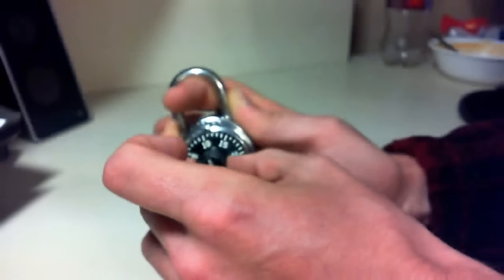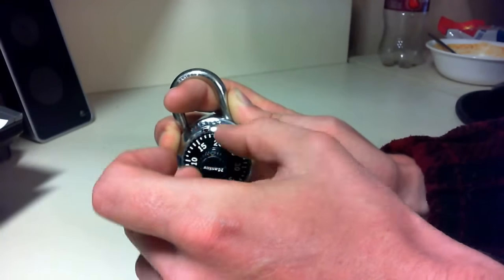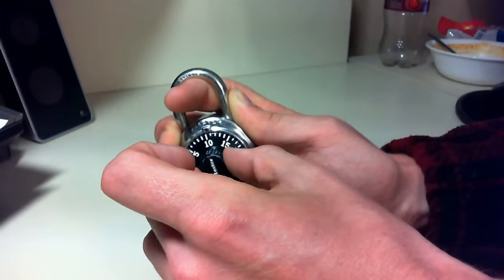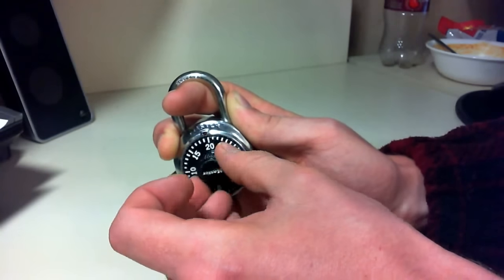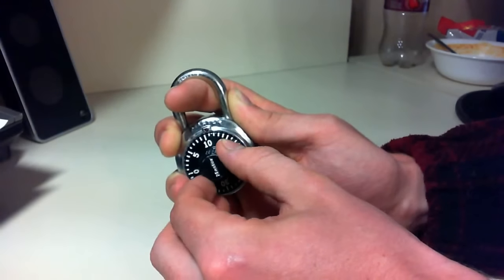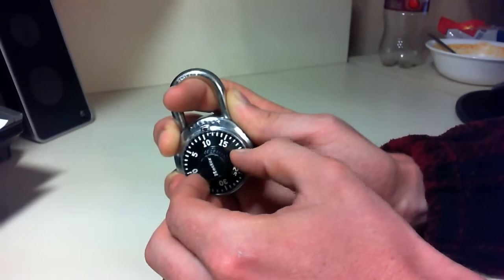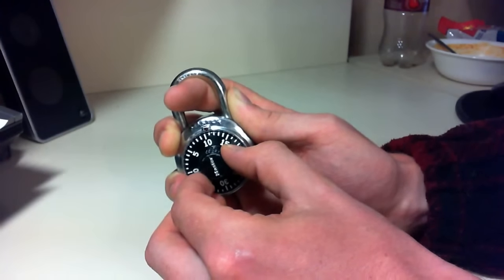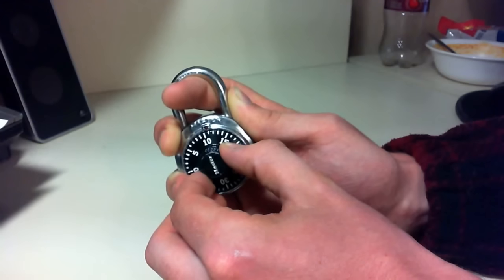It will catch and provide a little bit more resistance at just a single point as you go all the way around. Once you identify this point on this lock, it looks like it's at about ten and a half. If it's in between a number, you're just going to round up. So this is between ten and eleven, so we're going to round up to eleven.